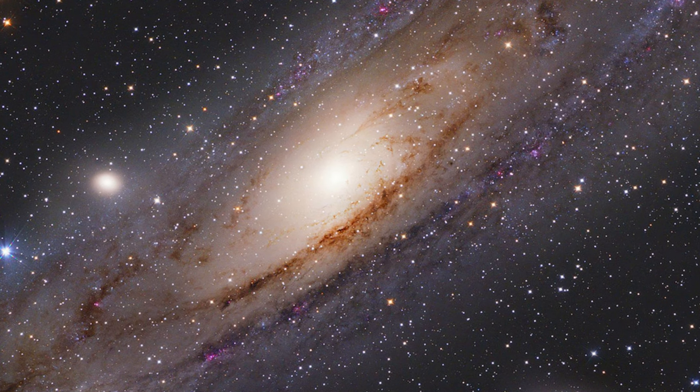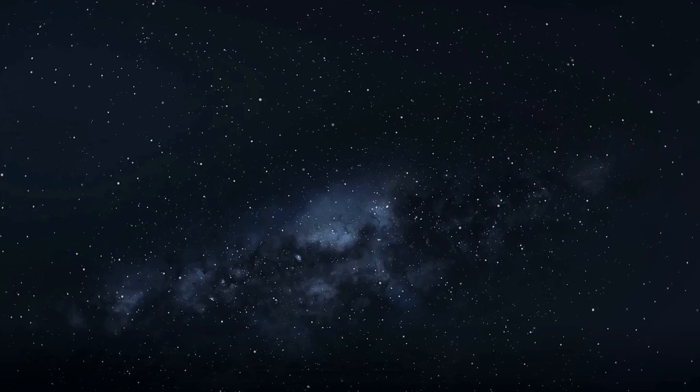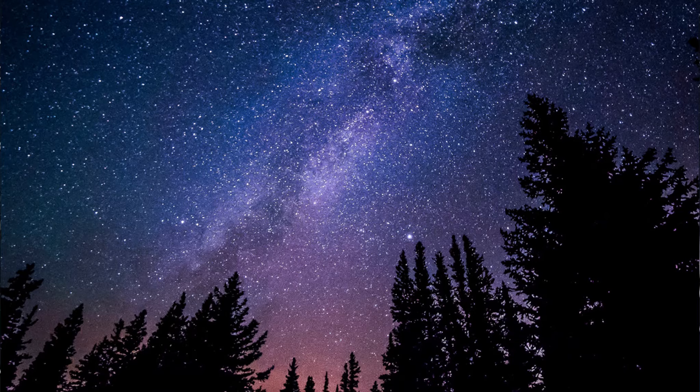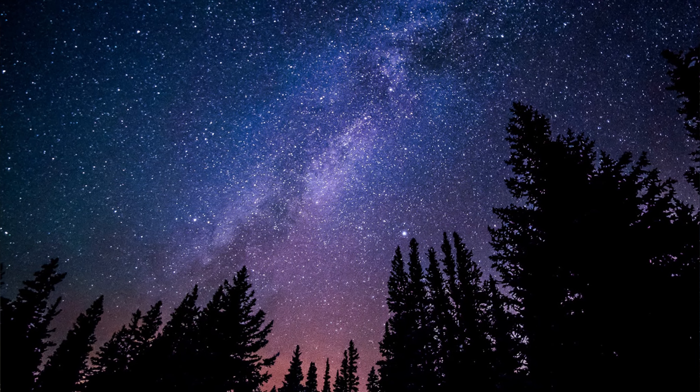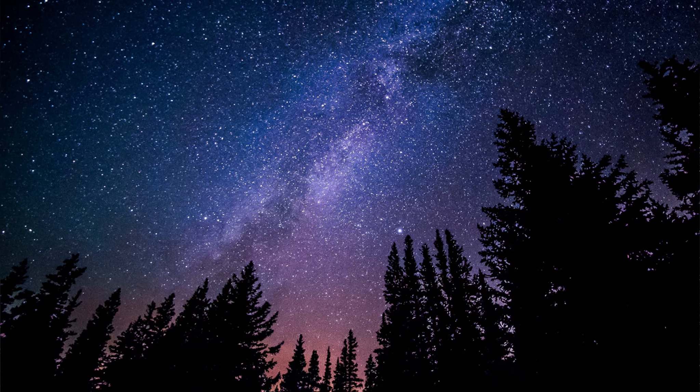When we talk about the edge of the universe, we're often referring to the observable universe. Now, what does this mean? Well, the observable universe is the region of space that we can, quite simply, observe. This is determined by the speed of light and the age of the universe.